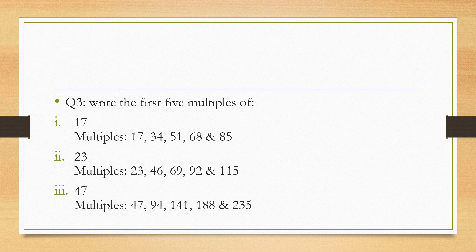Number three, we have 47. Multiples of 47 is 47, 94, 141, 188, and 235. These are the first five multiples of these numbers.